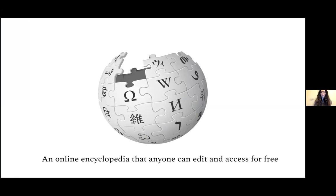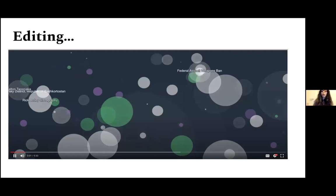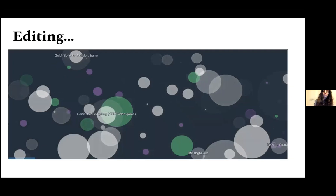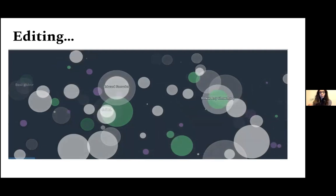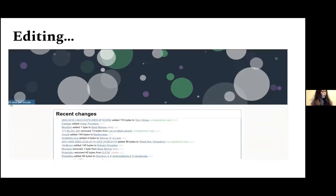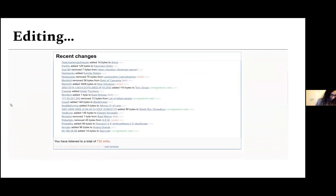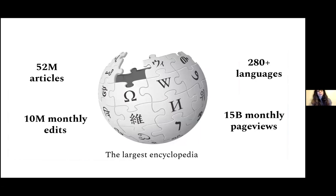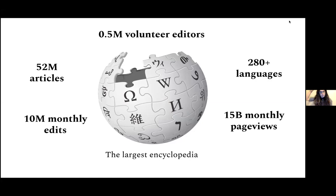Wikipedia is the largest online encyclopedia that anyone can edit and access for free. And you might also know that as we speak, Wikipedia is evolving. There are hundreds of thousands of volunteers and editors around the world that edit, create, change, and improve the content that you see every day on Wikipedia at a pretty steady pace. The result of this evolution is quite remarkable. As of today, Wikipedia is the largest encyclopedia online with about 52 million articles spanning more than 300 languages. The pace at which it changes is pretty huge, and every month Wikipedia gets edited about 10 million times.